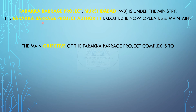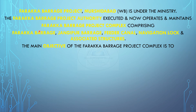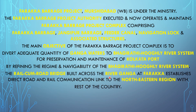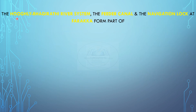The Farakka Barrage Project Complex, located at Murshidabad, West Bengal, comprises the Farakka Barrage, Jangipur Barrage, Feeder Canal, Navigation Lock, and associated structures. The main objective is to divert adequate quantities of Ganga waters to the Bhagirathi-Hooghly River system for preservation and maintenance of Kolkata Port by improving the regime and navigability of the Bhagirathi-Hooghly River system. A rail-cum-road bridge built across the Ganga at Farakka establishes a direct road and rail communication link to the north-eastern region with the rest of the country. The Hooghly-Bhagirathi River system, the feeder canal, and the navigation lock at Farakka form part of the Haldia-Allahabad Inland Waterway, which is National Waterway No. 1.